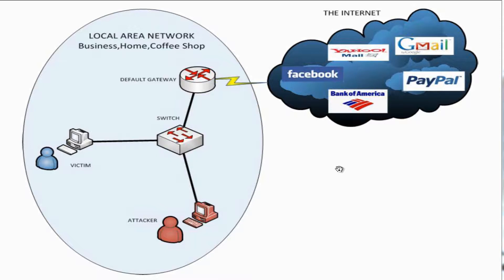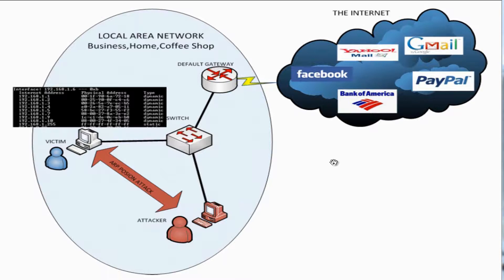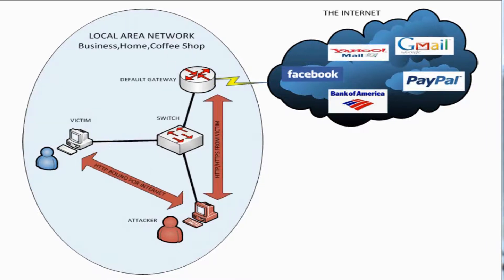SSLstrip works first by launching an ARP table poisoning attack to trick the victim into thinking that the attacker's MAC address is the MAC address of the default gateway. The victim will then send all traffic bound for the internet through the attacker's machine. The attacker's machine will then forward this data, redirecting traffic destined to port 80 to SSLstrip running on the attacker's machine.